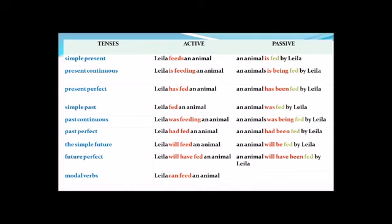With modal verbs — can, should, must, have to, might, may, etc. — the pattern is the same. For example: 'Layla can feed an animal' → 'An animal can be fed by Layla.' These are the transformations from active to passive across all the tenses.